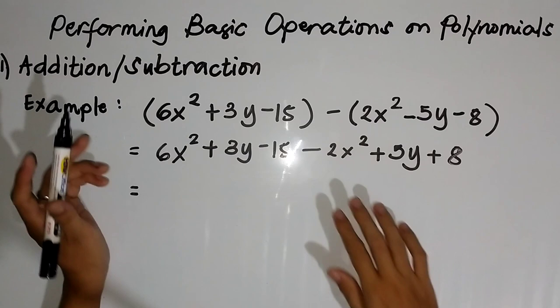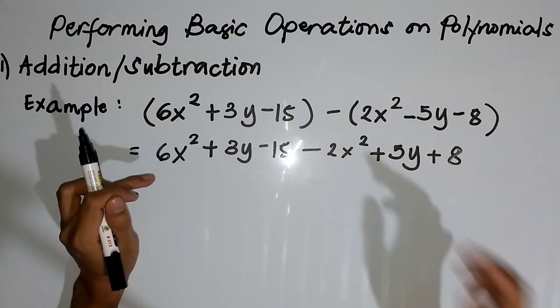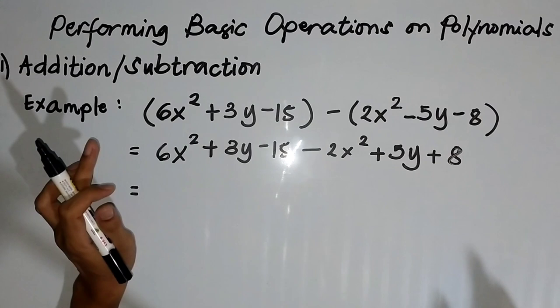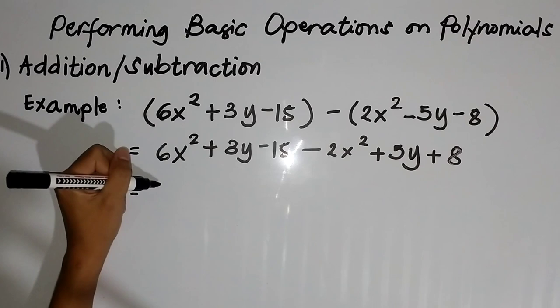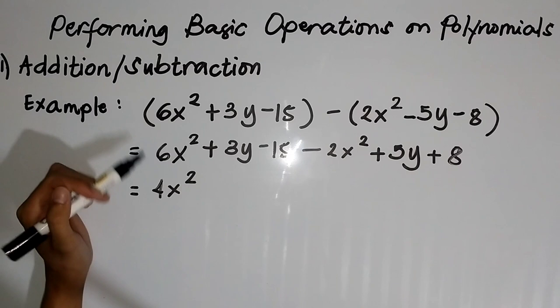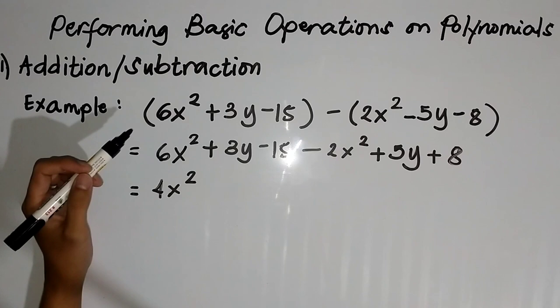Now let's proceed to combining like terms. Look for the terms that are alike. In our case we have 6x squared and negative 2x squared. We subtract: 6x squared minus 2x squared equals 4x squared. What we did is we just subtracted the coefficients and then copied the sign of the greater term — in our example the greater term is 6x squared.